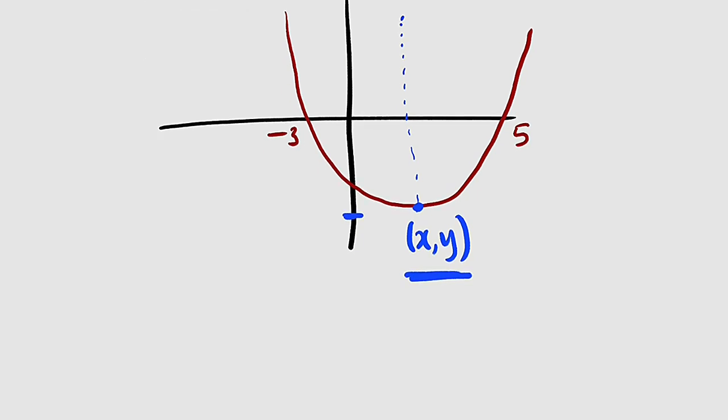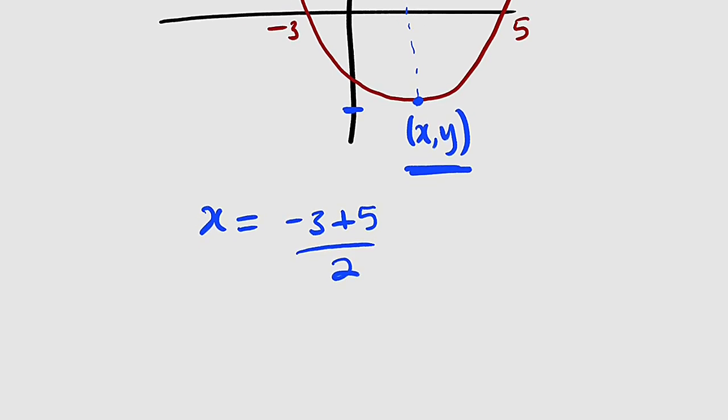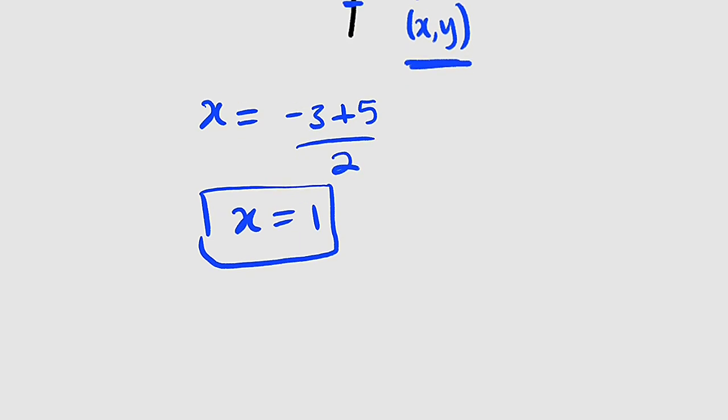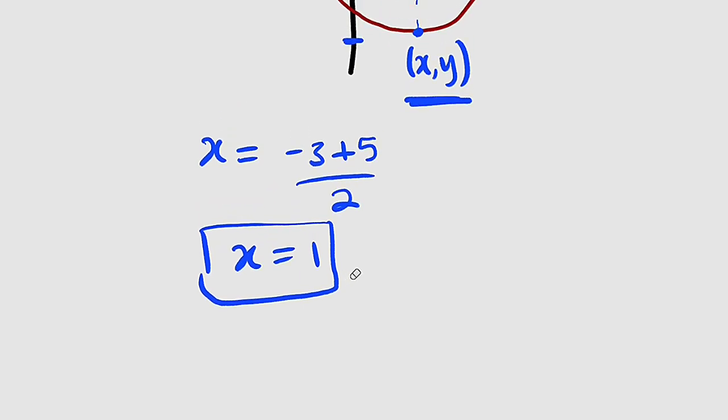So therefore the x at that point is equal to negative 3 plus 5 divided by 2. Negative 3 plus 5 is positive 2 and positive 2 divided by 2 is 1. Therefore x equal to 1 at that point. So what will be the corresponding value of y at that point? We can substitute x equal to 1 in our main equation to find the corresponding value of y.